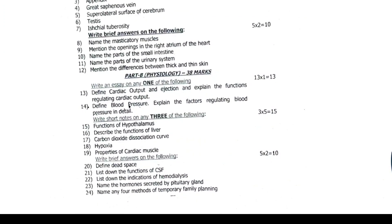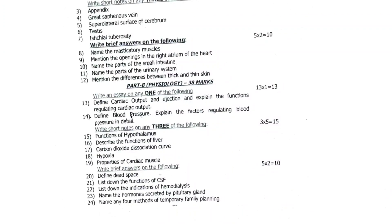Physiology short notes — out of five, answer any three: functions of hypothalamus; describe the functions of liver; carbon dioxide dissociation curve; hypoxia; properties of cardiac muscle. 3 into 5 equals 15 marks. Brief answers: define dead space; list down the functions of CSF; list down the indications of hemodialysis; name the hormones secreted by pituitary gland; name any four methods of temporary family planning.